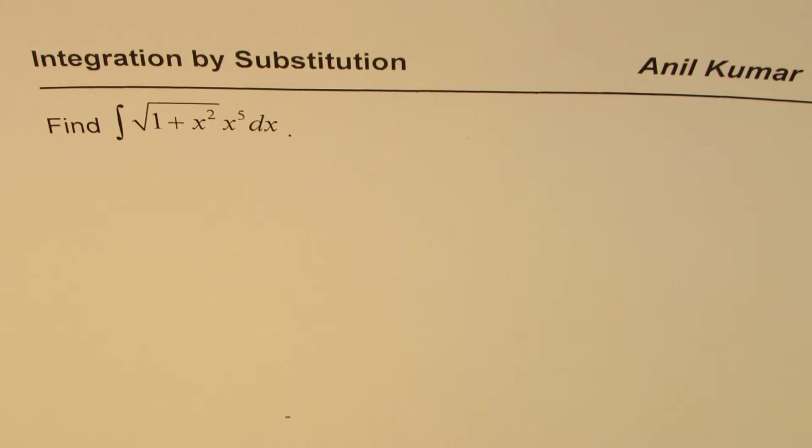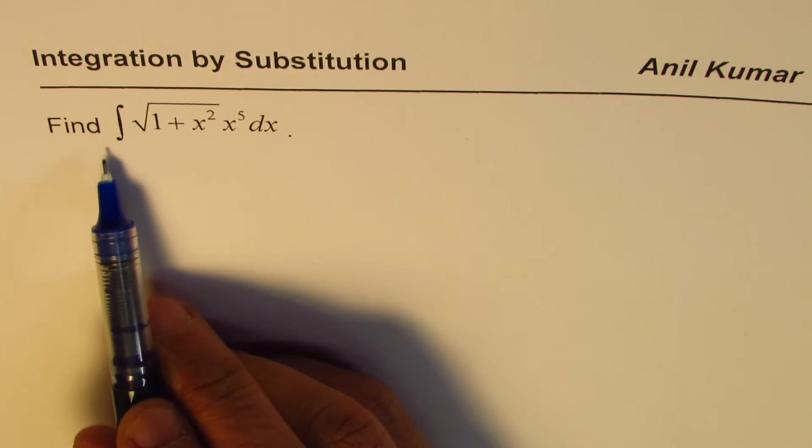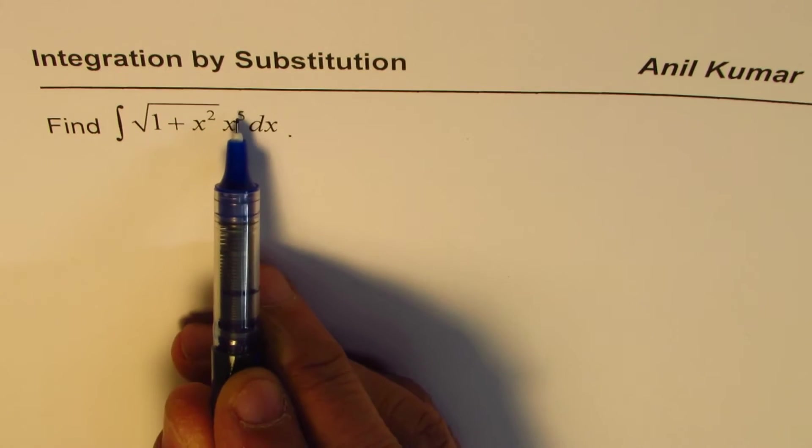I'll walk you through the steps and the thinking behind substitution. When you have a function like this, we have the integral of square root of 1 plus x squared times x to the power of 5 dx.